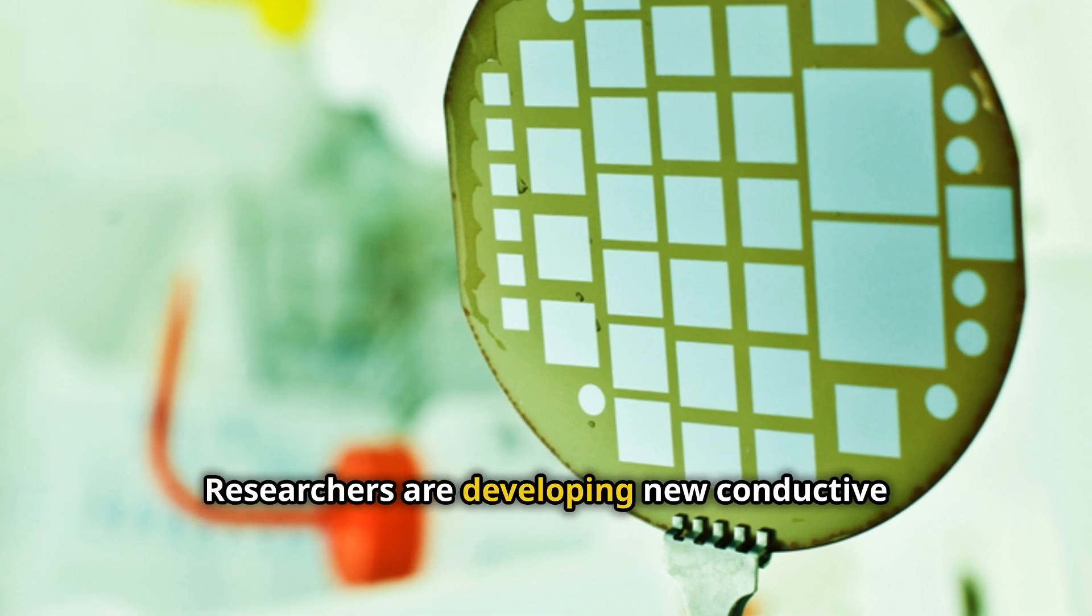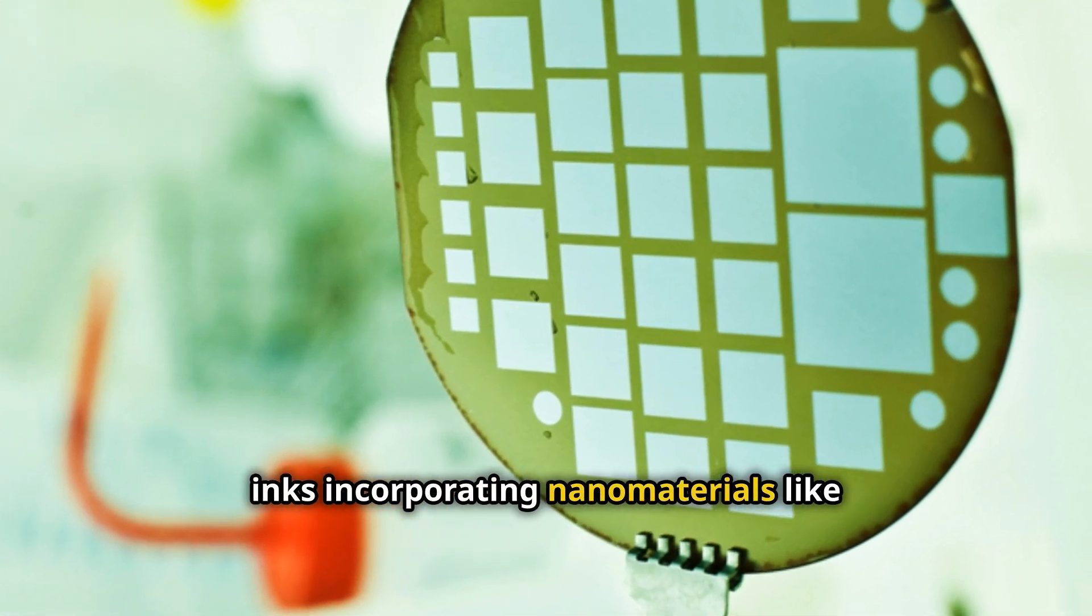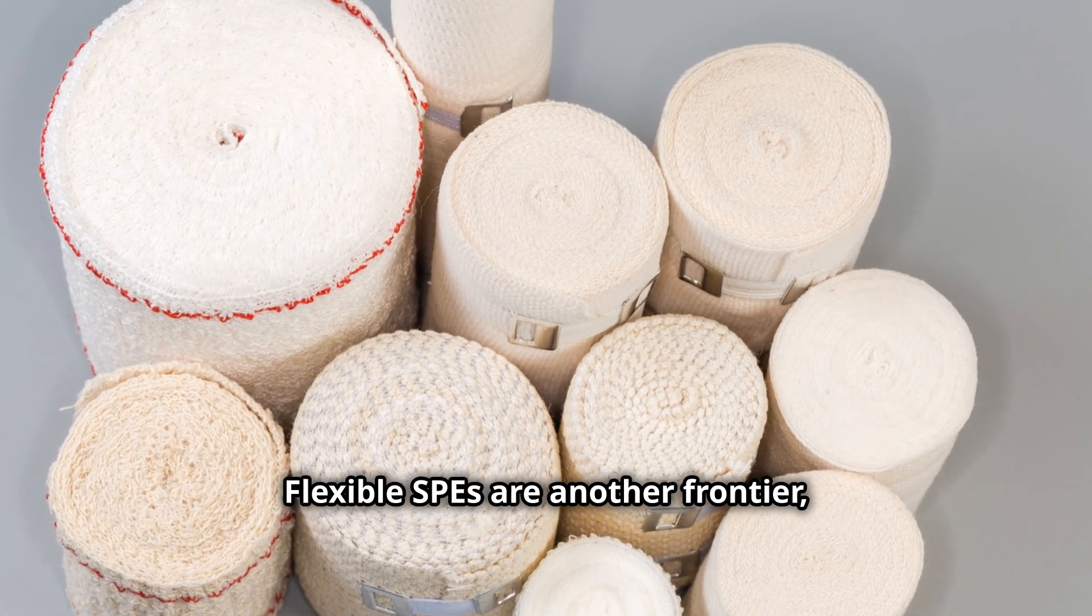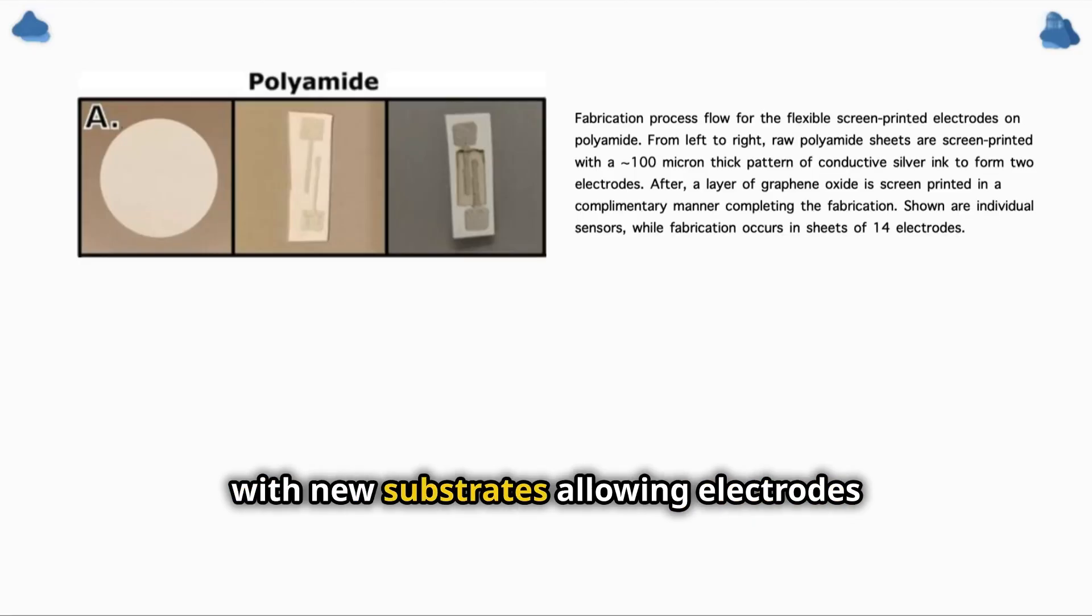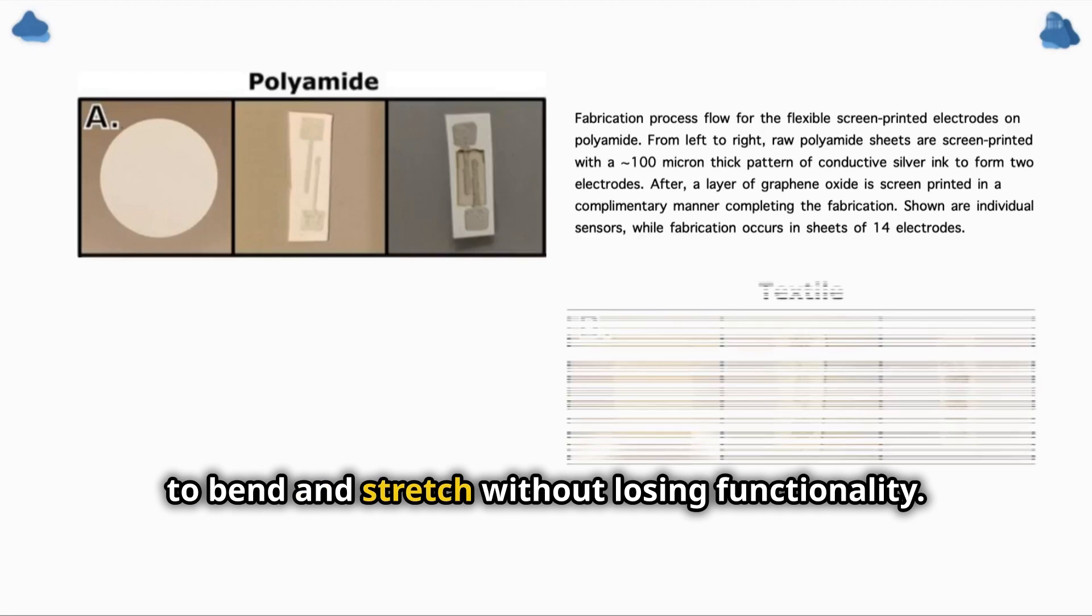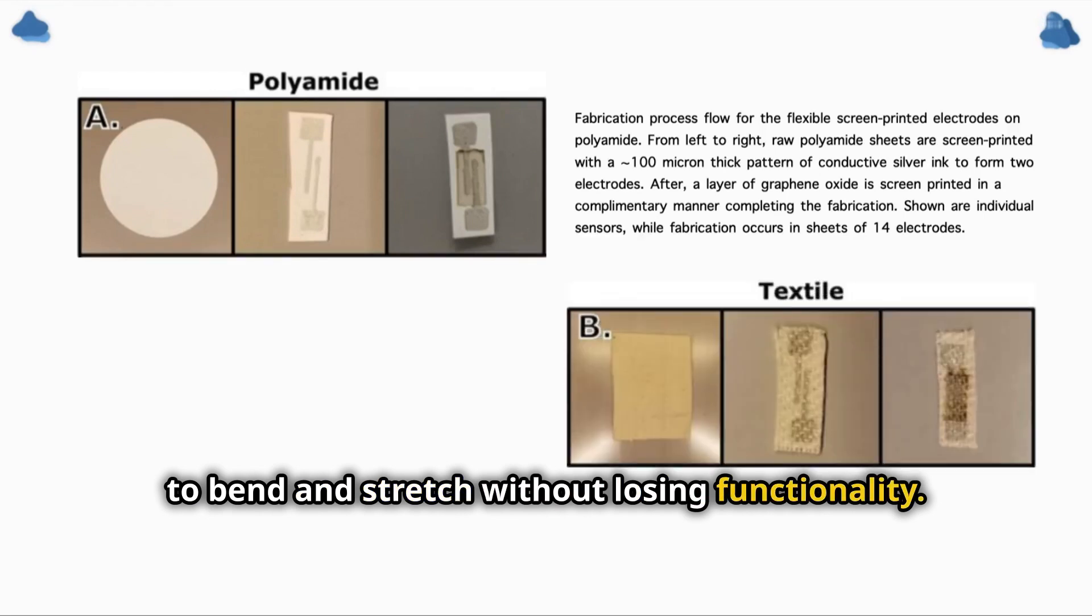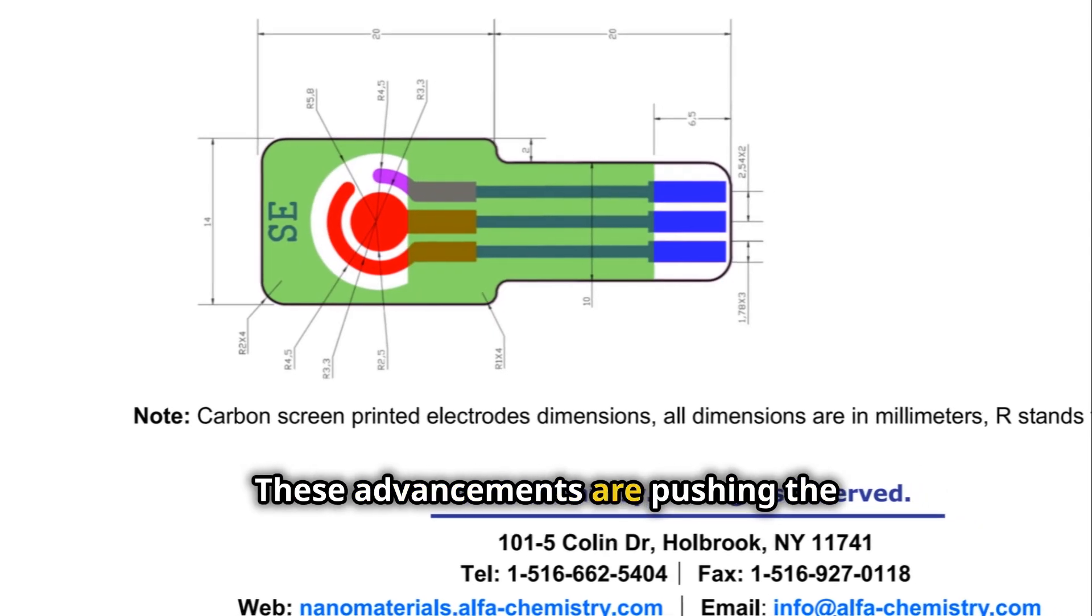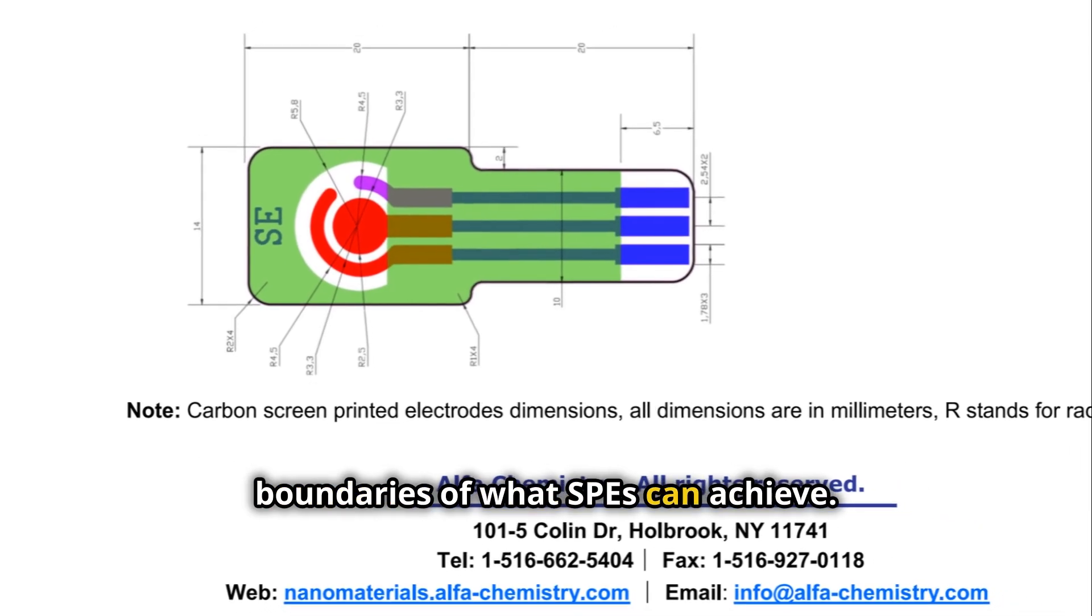Researchers are developing new conductive inks incorporating nanomaterials like graphene and carbon nanotubes. Flexible SPEs are another frontier, with new substrates allowing electrodes to bend and stretch without losing functionality. These could be integrated into wearable devices or smart textiles for real-time monitoring. These advancements are pushing the boundaries of what SPEs can achieve.